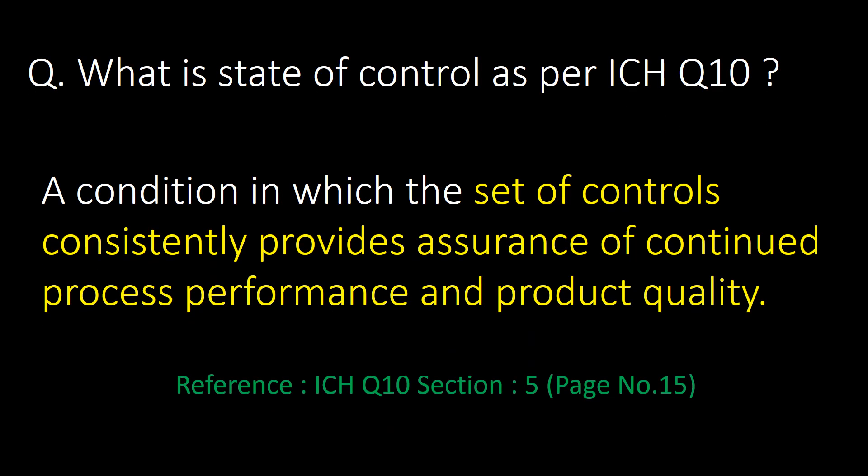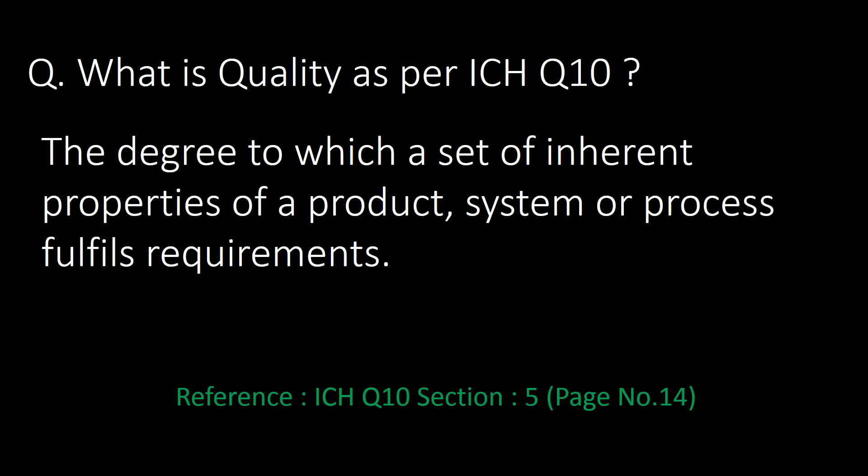What is state of control as per ICH Q10? State of control is a condition in which a set of controls consistently provides assurance of continued process performance and product quality. What is quality as per ICH Q10? Quality is the degree to which a set of inherent properties of a product, system, or process fulfills requirements.